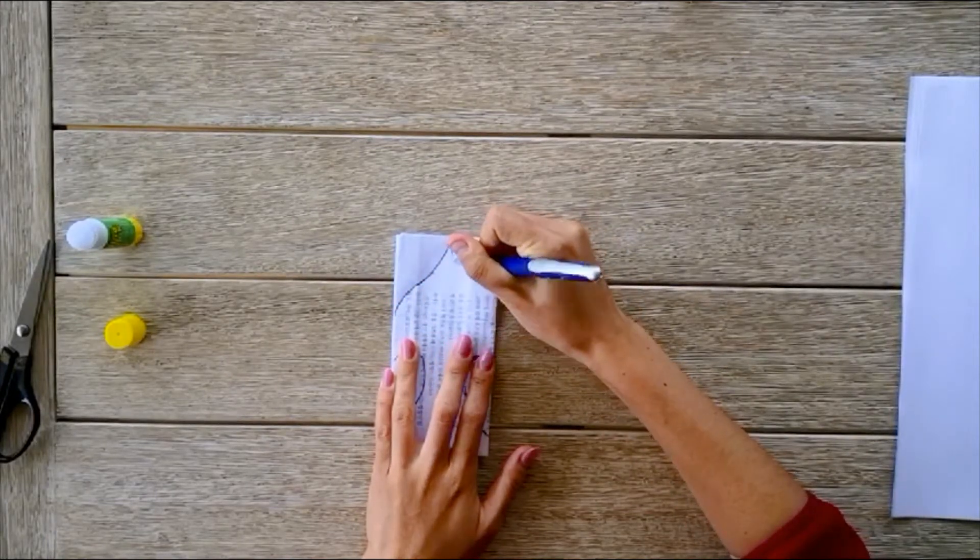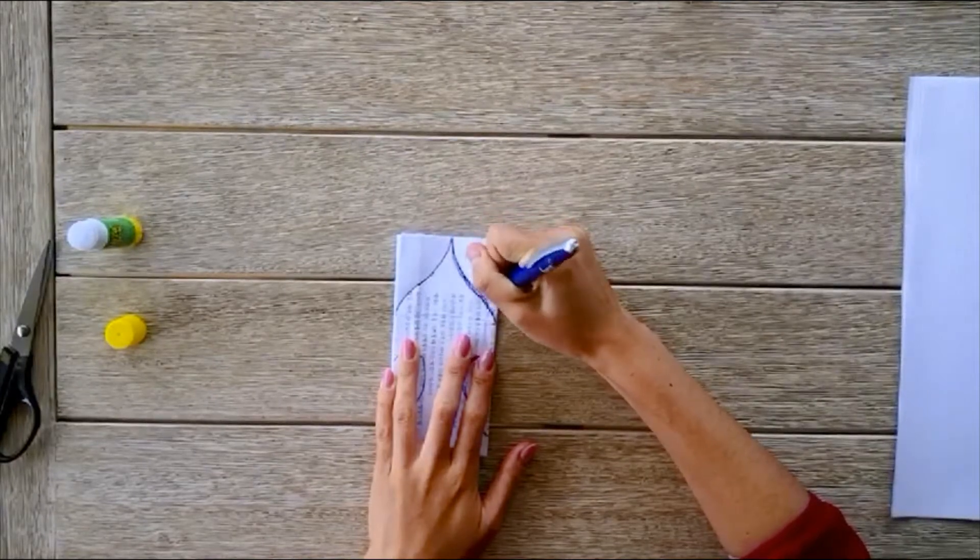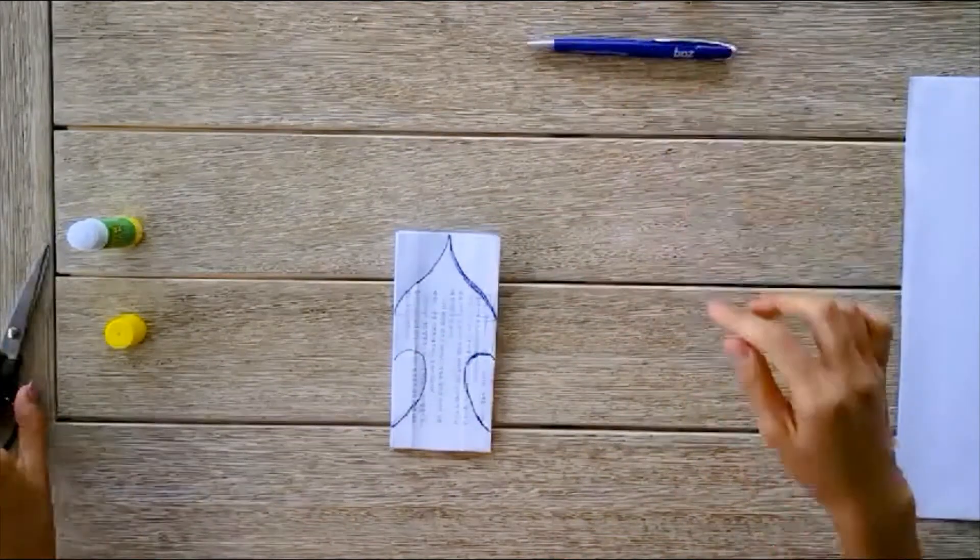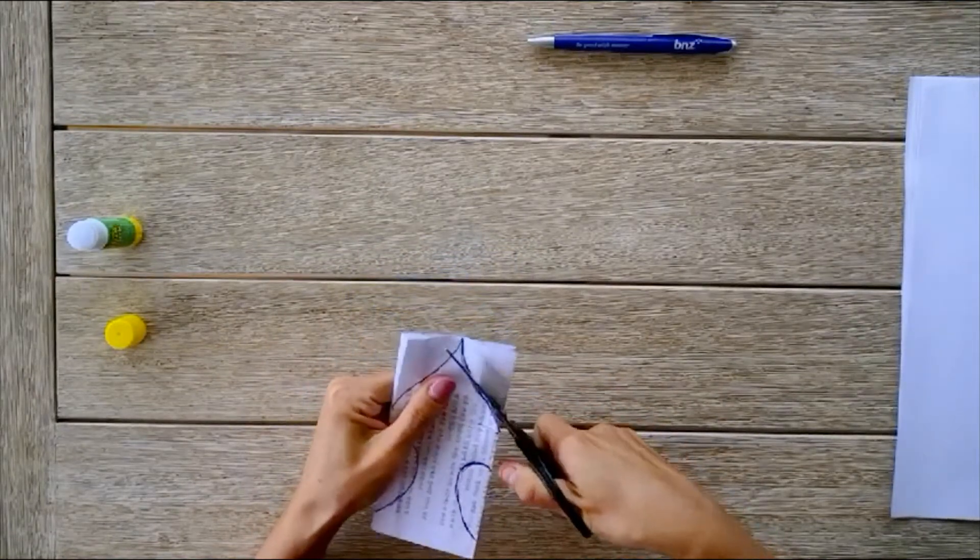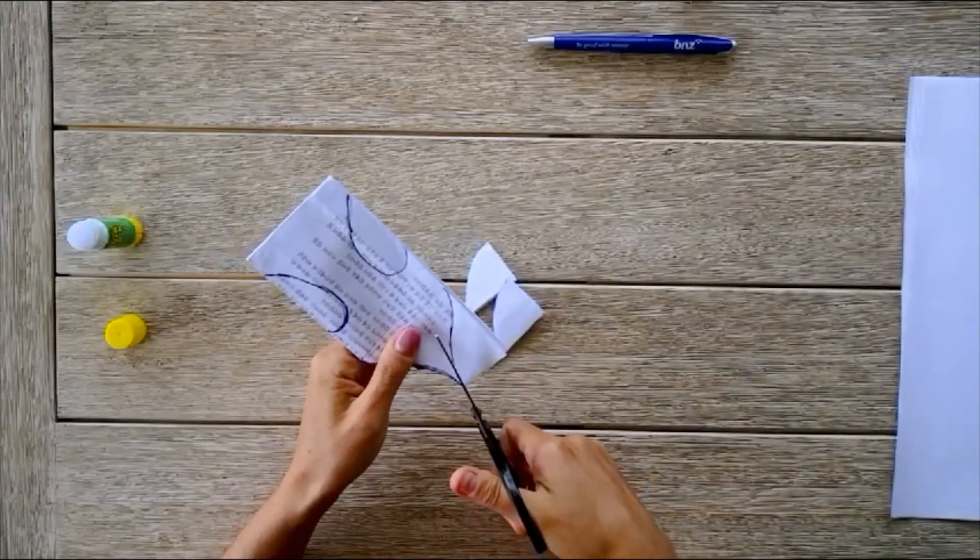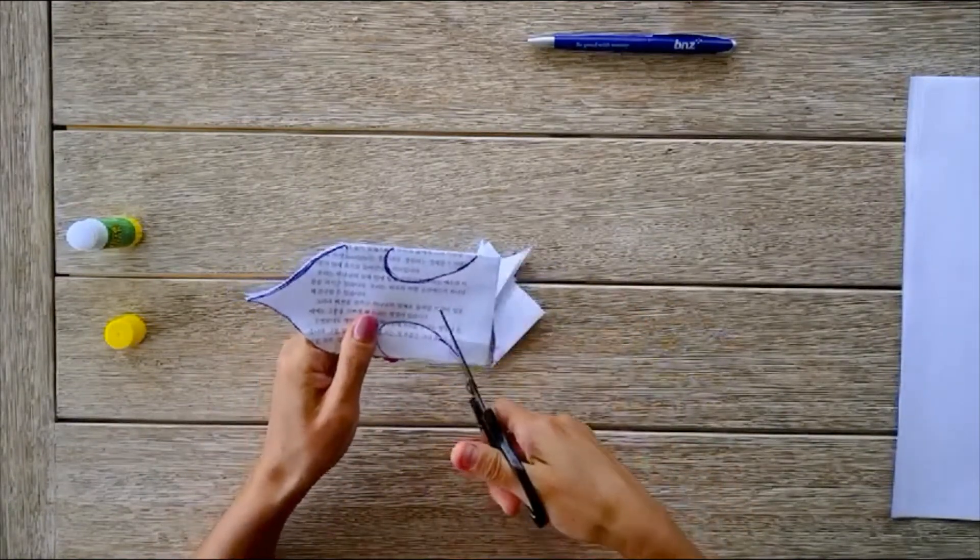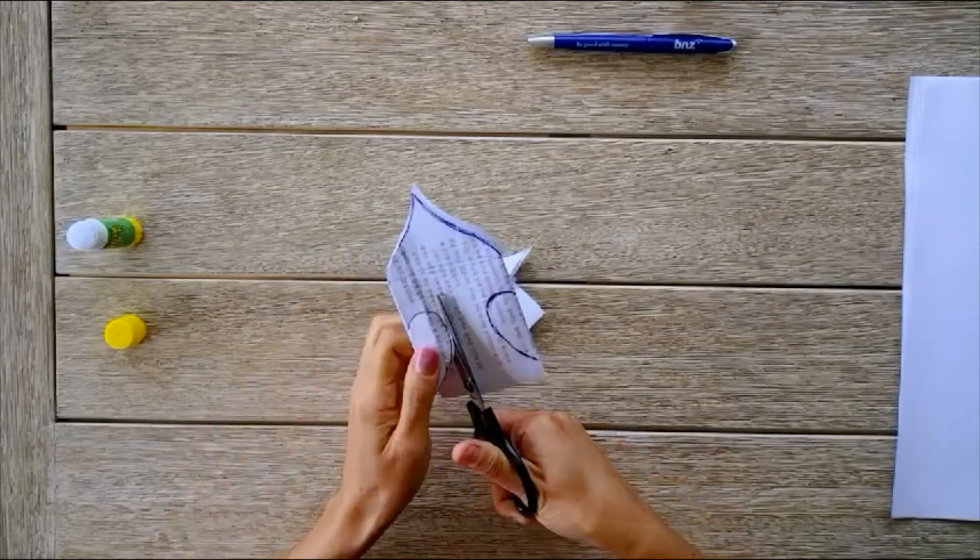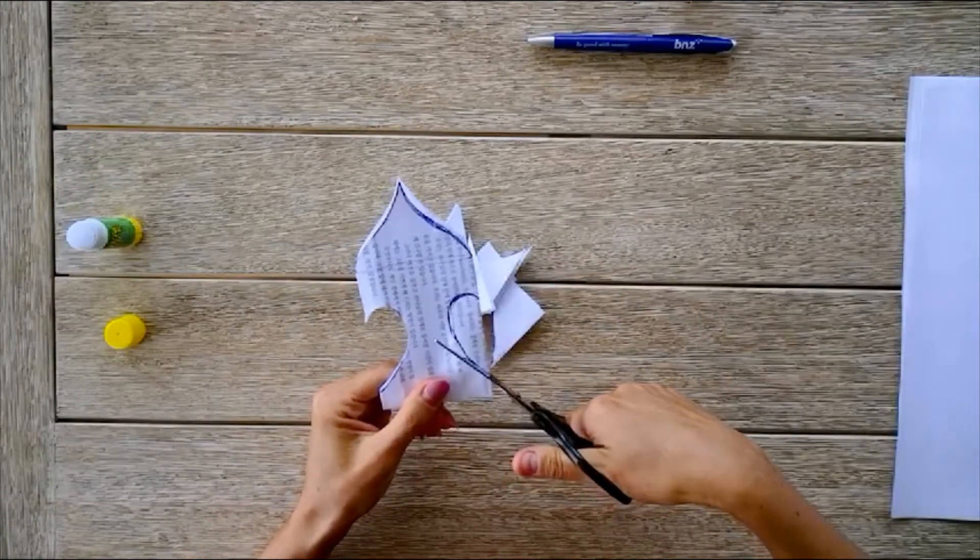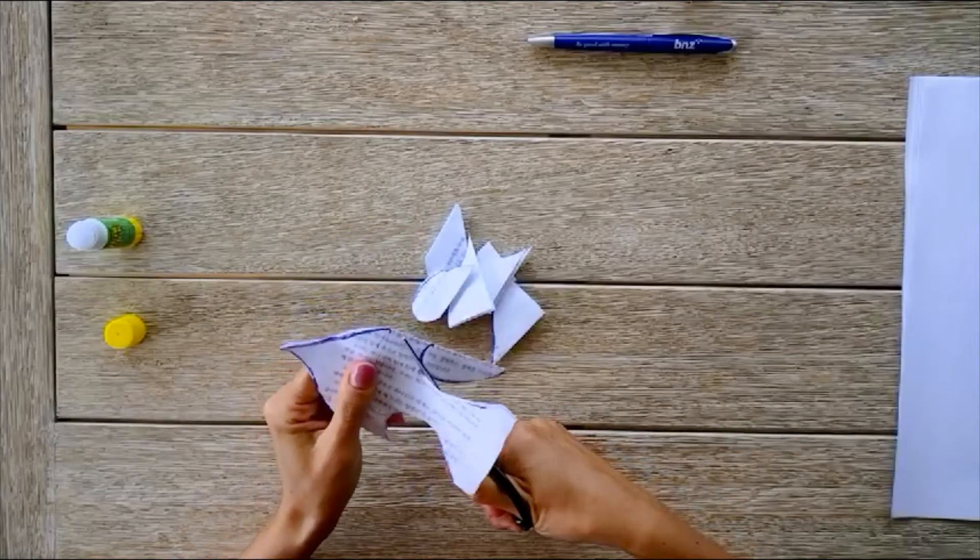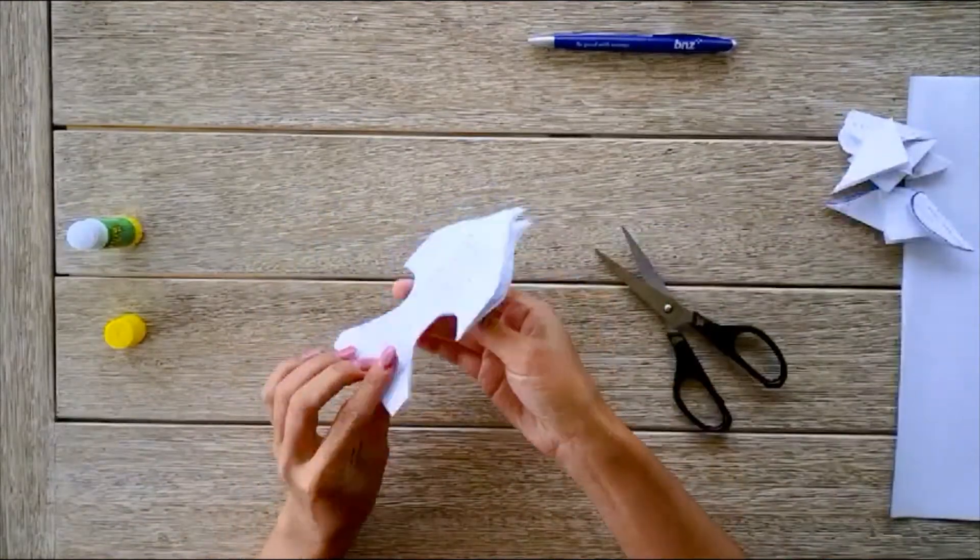Now I am just going to cut out these bits. Just grab my scissors, just cut out the hearts. So I am left with a shape like this.